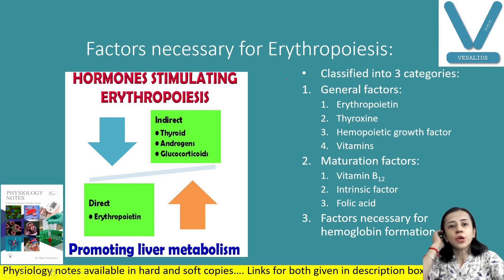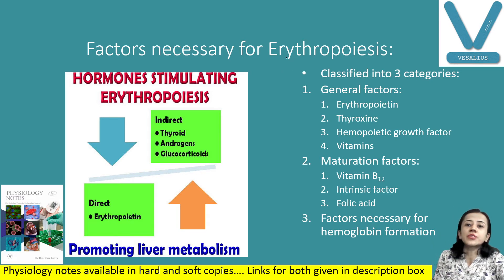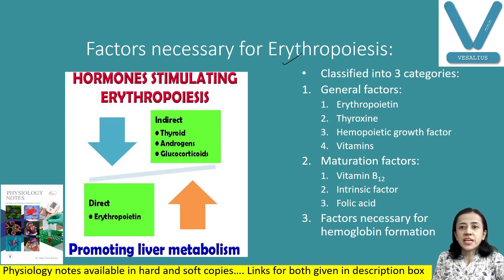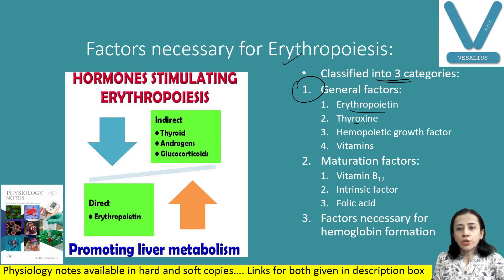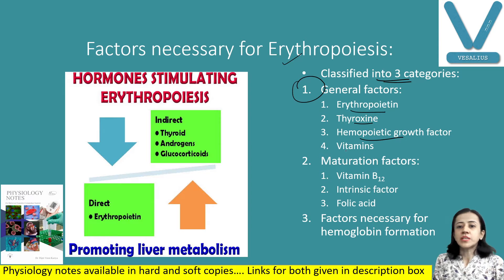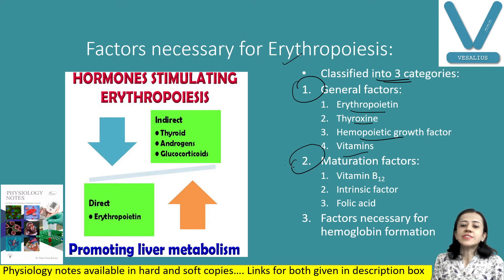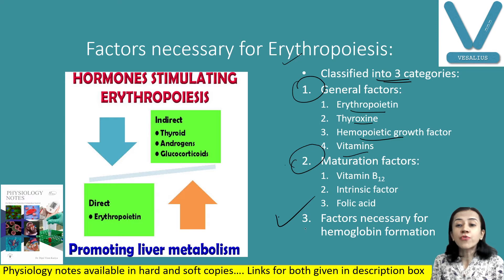Now let us start with today's topic: factors necessary for erythropoiesis. These factors are classified in three categories. Number one is general factors — erythropoietin, thyroxine, hematopoietic growth factors, and vitamins. Number two, maturation factors — vitamin B12, folic acid, and intrinsic factor. And number three, factors required for hemoglobin formation.